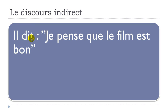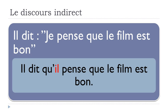First example: 'Il dit je pense que le film est bon.' He says 'I think that the film is good.' If you want to modify this sentence, you can't say 'il dit que je' — you have to adapt the subject. So it becomes 'Il dit qu'il pense que le film est bon.' That's the only change needed, but keep in mind that the subject 'je' must be modified to match the first subject 'il.'